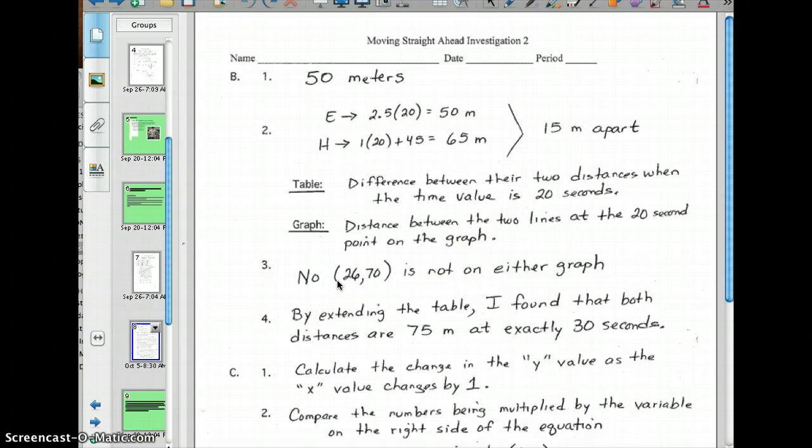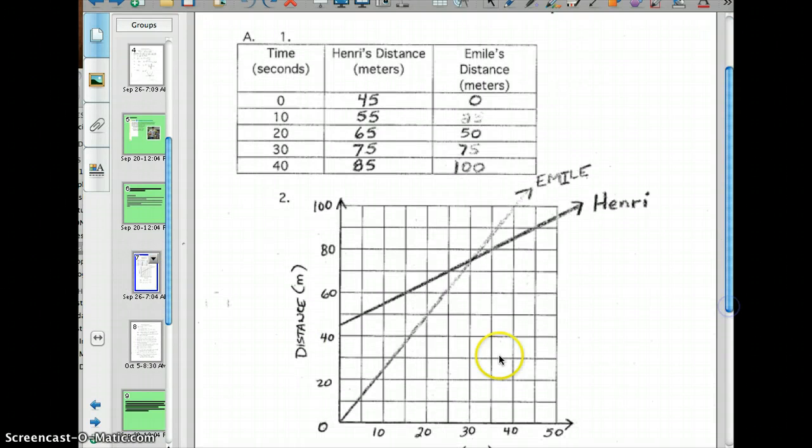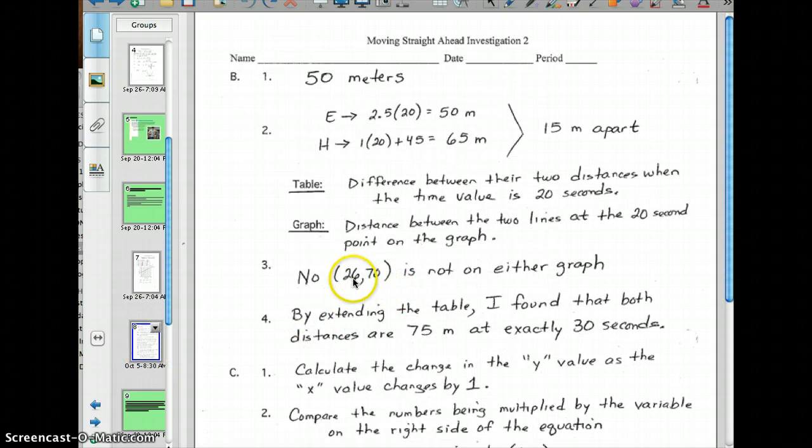So, now we're on to question 3. Is the point (26,70) on either graph? And no, it's not. If you look back at the graph here, you want to look at where time is 26, and that's going to be about right here, (26,70). And here is 70, so it is not. You can look at your table here, and at 26 we don't have it there, but at 25, Henry's going to be at 70. So at 26 seconds, he's going to be further than 70 meters. And then Emil here at 26 seconds, he's going to be under the 70. So he's not going to be there either. So know that point, and remember, this point (26,70) is your x value and your y value, the time versus the distance. And it's not on either graph.